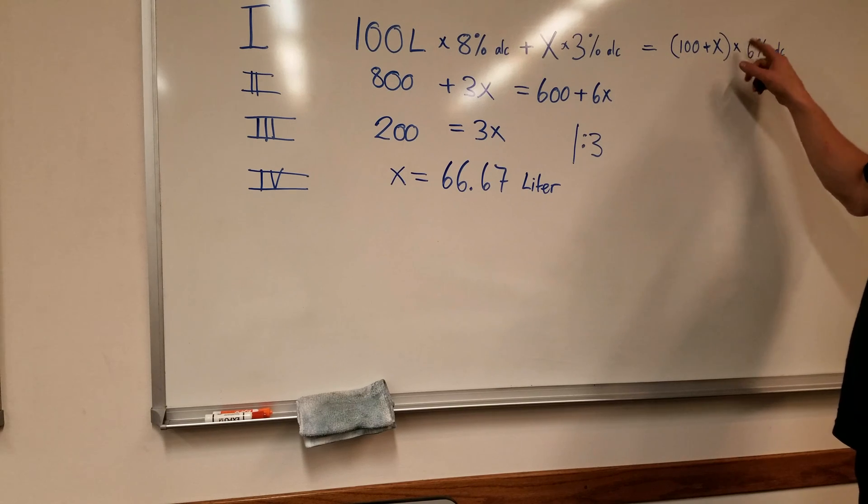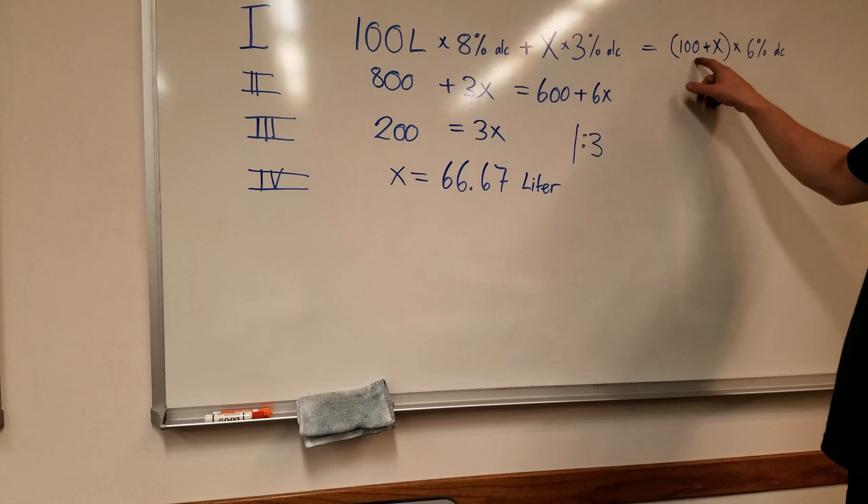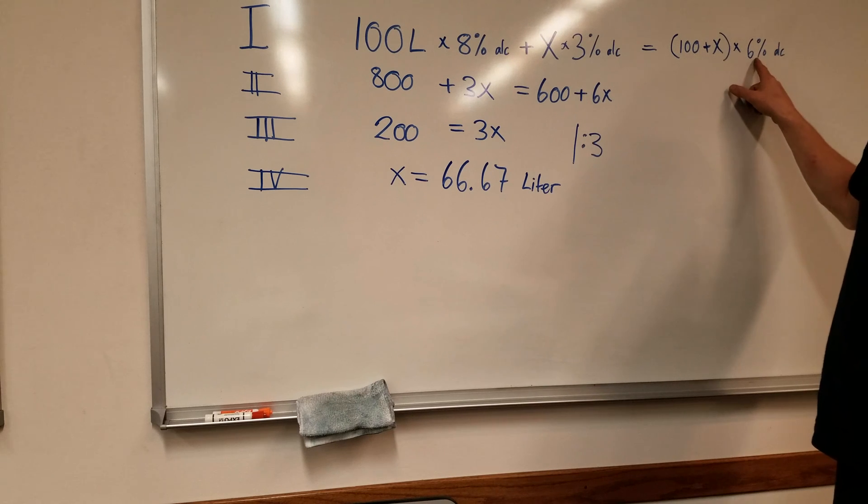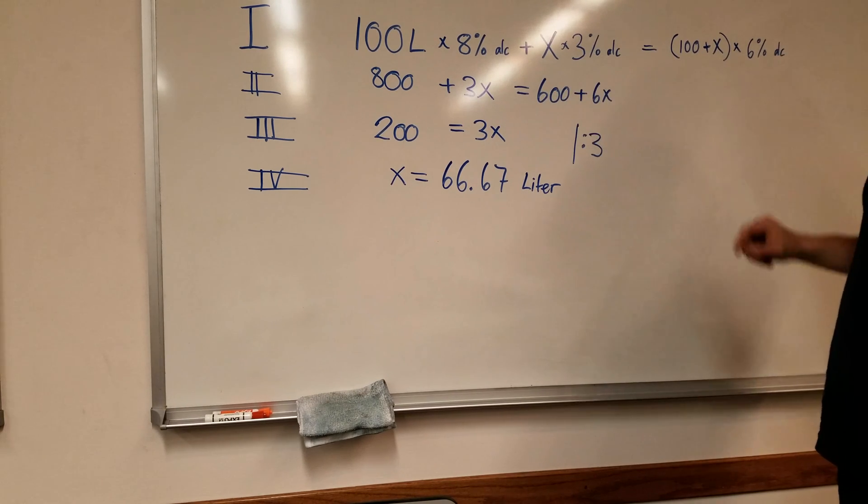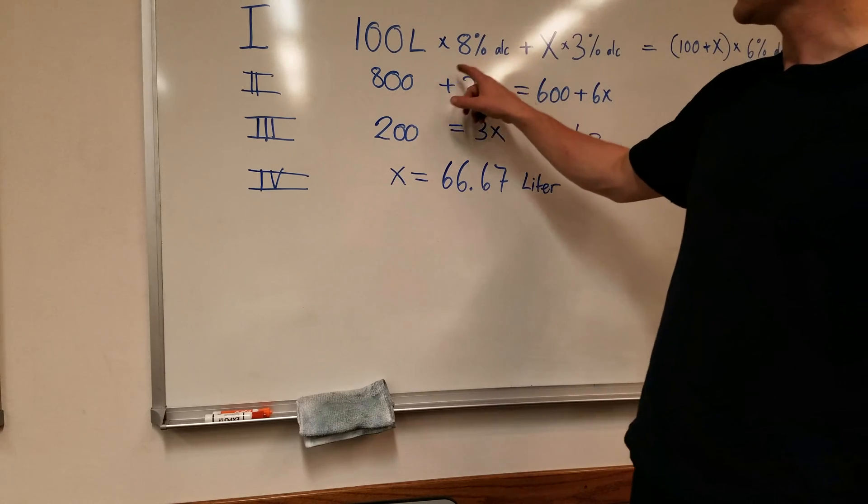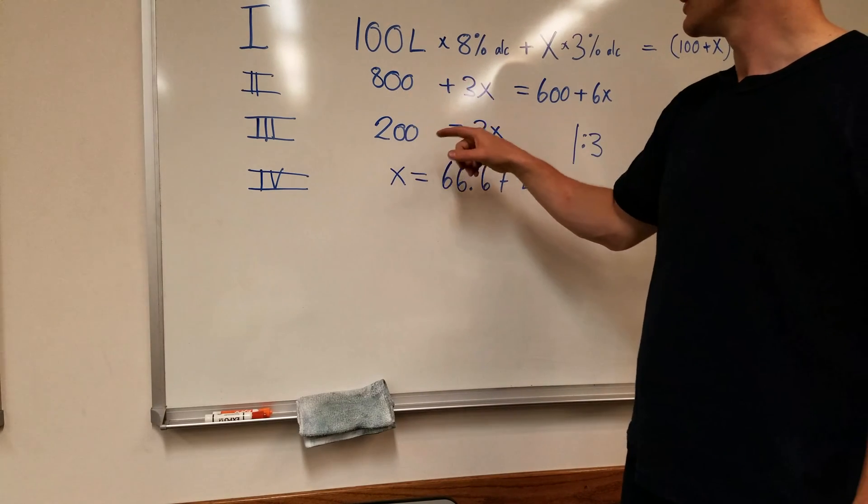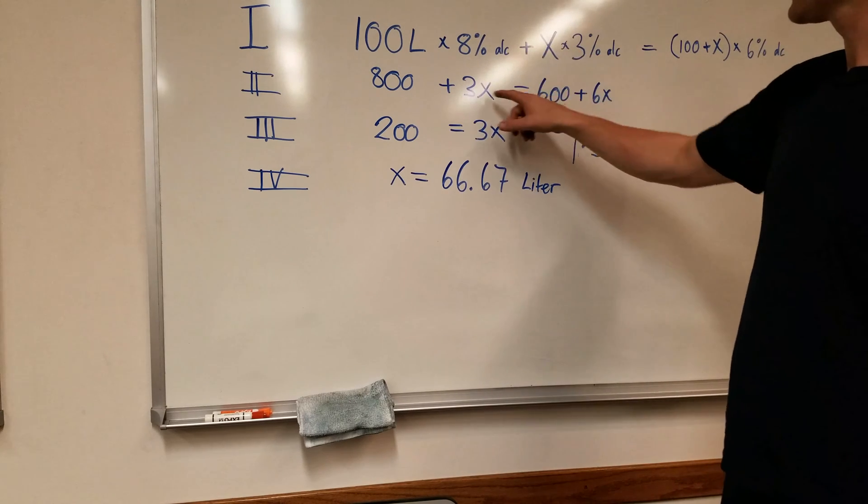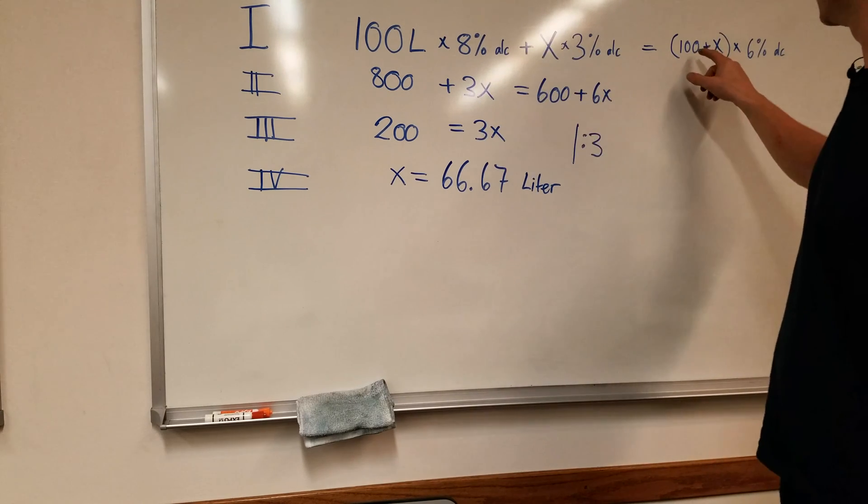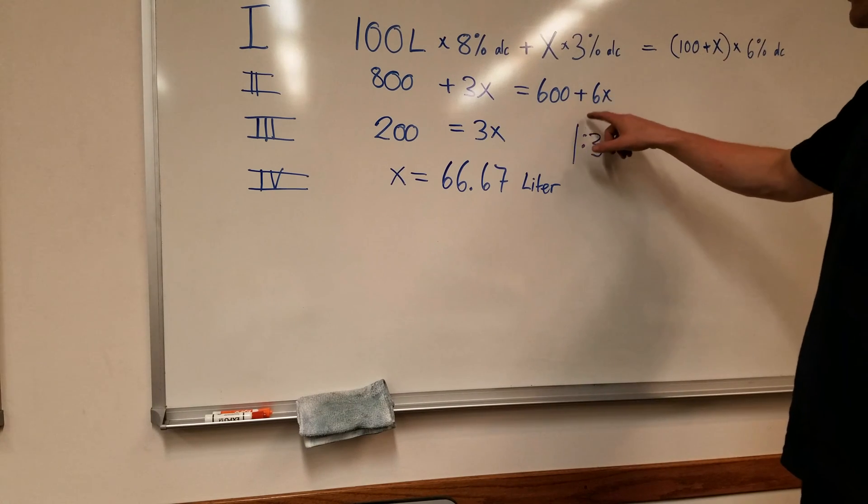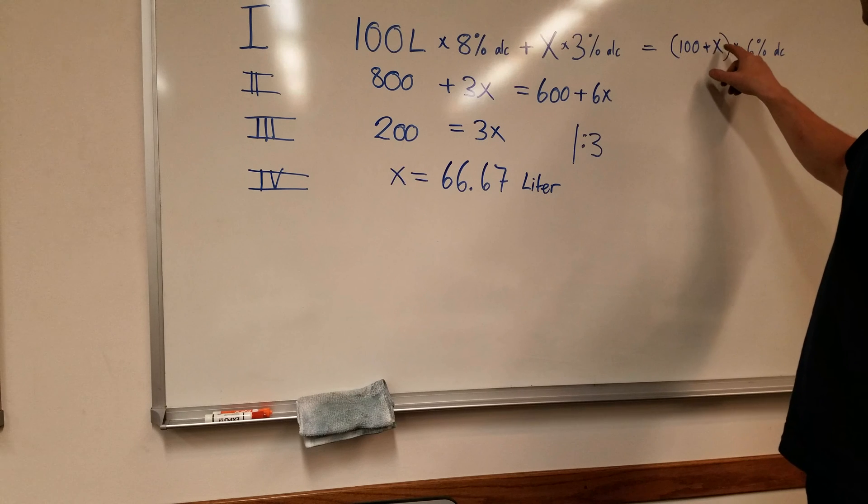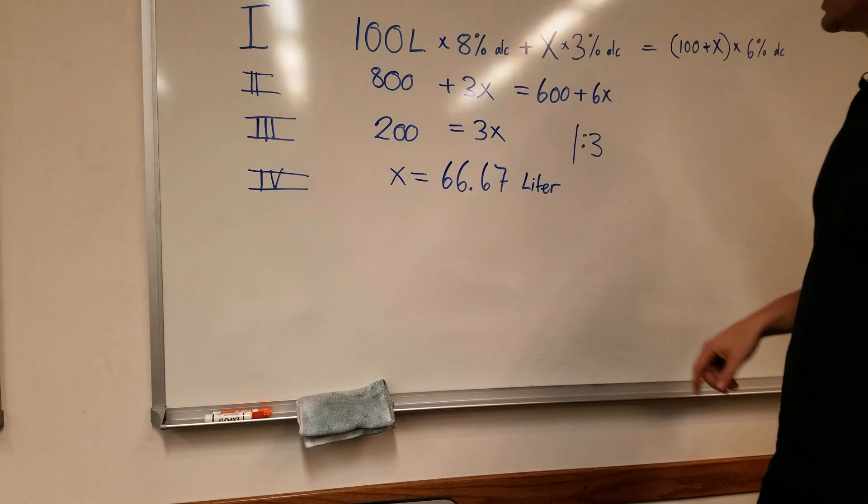100 from there, and we want it to be 6% at the end, so times 6, plus x, the unknown amount, times the same 6. So when we solve it here, 8 times 100 is 800, plus 3 times x, 3x, equals, distribute out, 100 times 6 is 600, plus 6 times the x is 6x. Then we solve it.